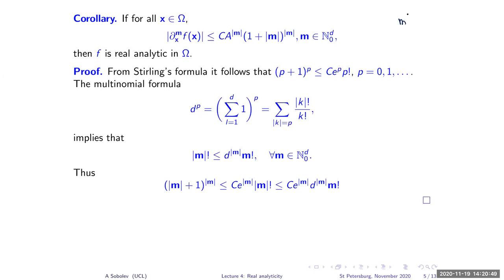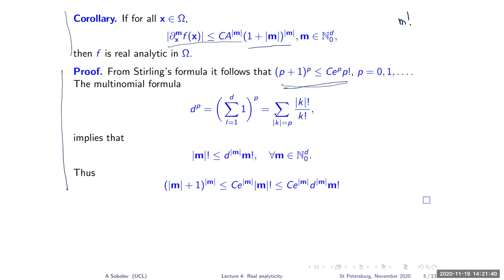An important observation is that instead of the m-factorial bound from the previous slide, you can estimate the function by m to the power m, and that is enough for real analyticity. This is a simplified version: if at every point you have this bound with constants C and A independent of the point, then you have real analyticity. The proof is straightforward and based on Stirling's formula. This is very convenient for practical applications — if you look at books on differential equations or elliptic equations, exactly this bound is used in the proofs.